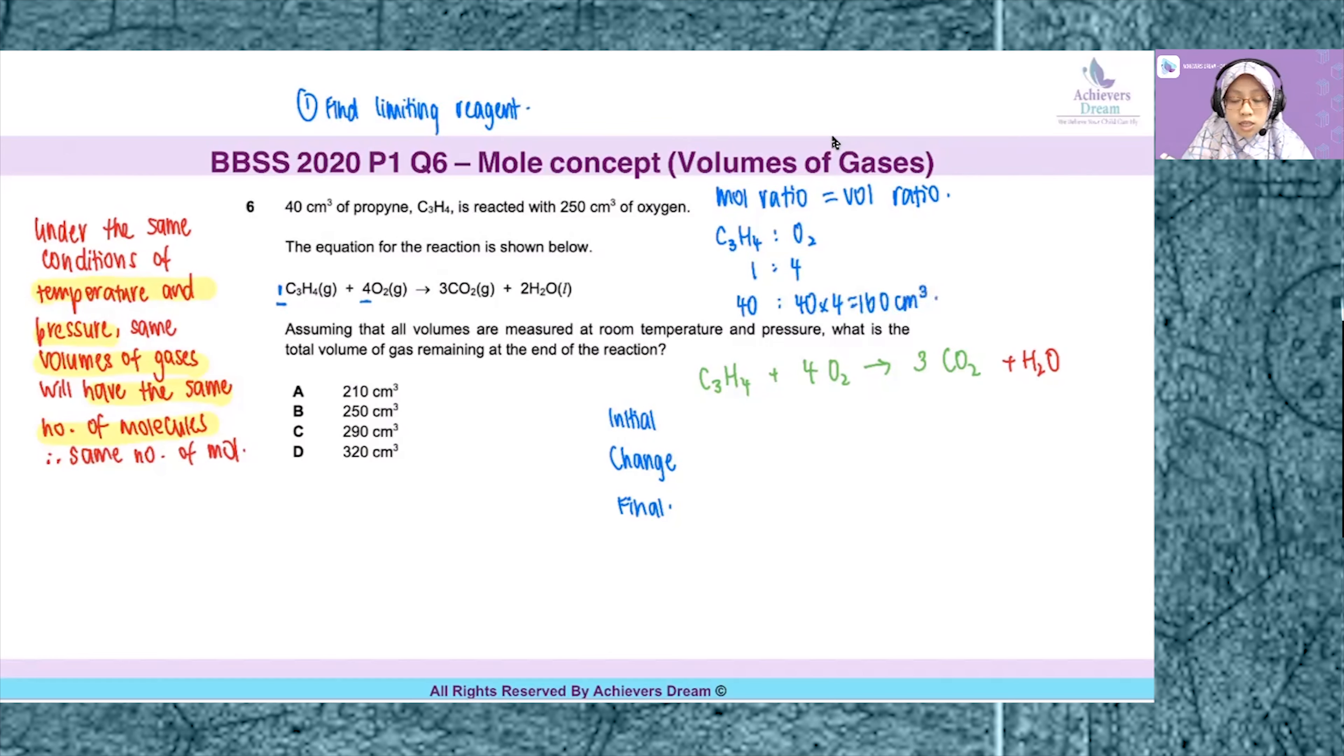However, in the system I have 250 cm³ of oxygen. This means that oxygen is in excess.